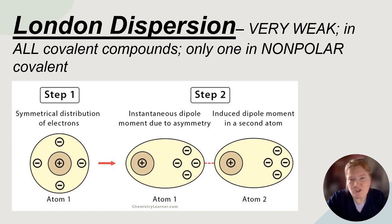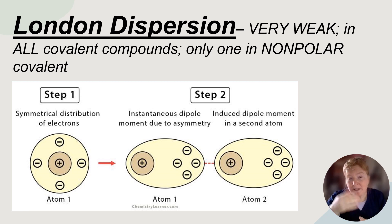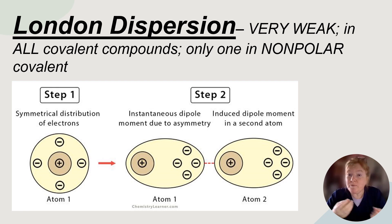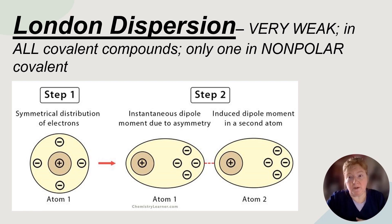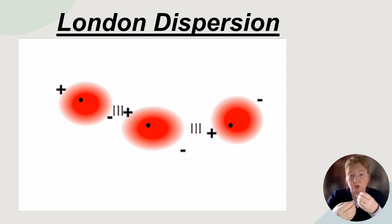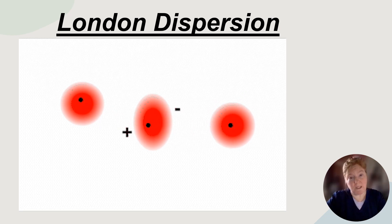London dispersion forces are super weak. They're in all covalent compounds, but in nonpolar compounds, these are the only ones present — so nonpolar substances have just this really weak force. What happens is that molecules will temporarily shift so that there's a positive end and a negative end temporarily, and then it reshifts. That shifting results in some temporary attractions that are continuously in flux. These forces are pretty weak.